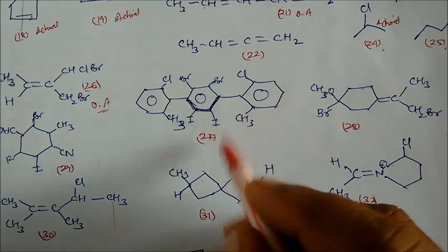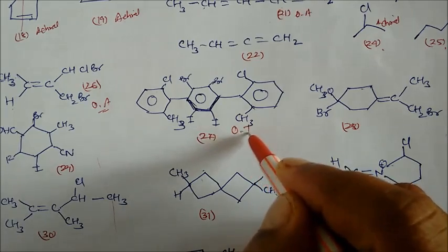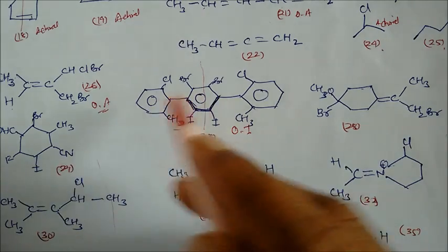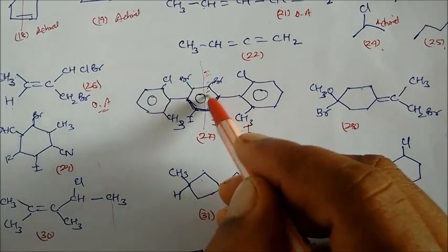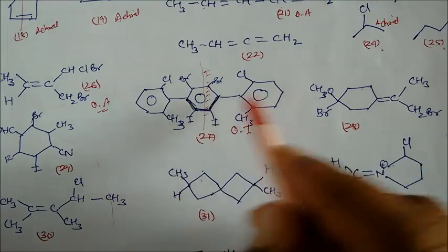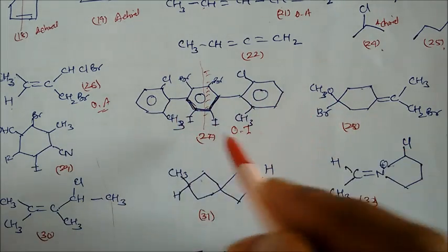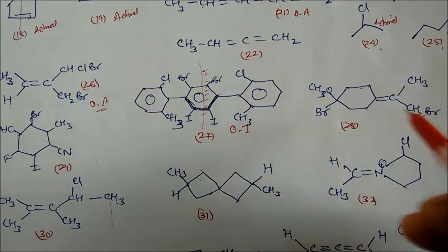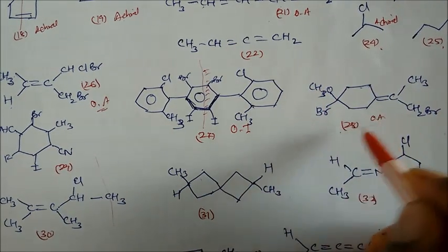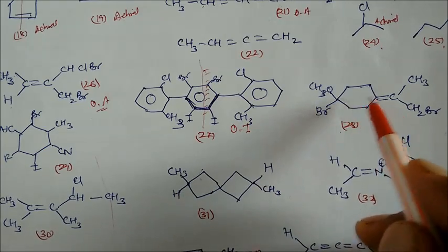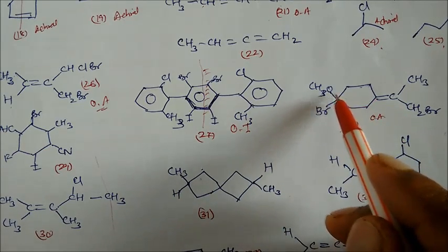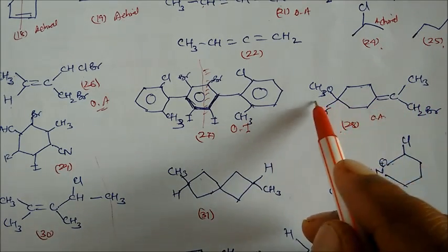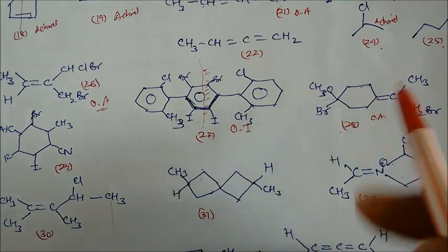Compound 27 is optically inactive because if you draw a diagram, both sides are similar to each other — one part is the mirror image of the other, so any part is a mirror image, making this optically inactive. Compound 28 is optically active — this part is different from that part, so drawing the diagram also shows they are not symmetrical to each other.